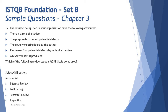Question 17 asks about reviews being used in your organization with the following attributes: there is a role of scribe, the purpose is to detect potential defects, the review meeting is led by the author, reviewers find potential defects by individual review, and a review report is produced.